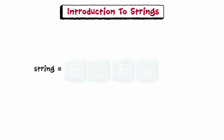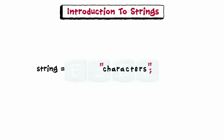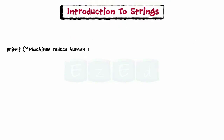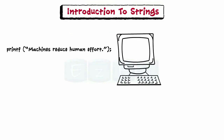Let's start with an introduction to strings first. A string is a collection of characters and is treated as a single data item. In C, strings are represented by characters written within double quotation marks. In order to print a statement on the screen using a C program, we write it in this way, and it produces this output.